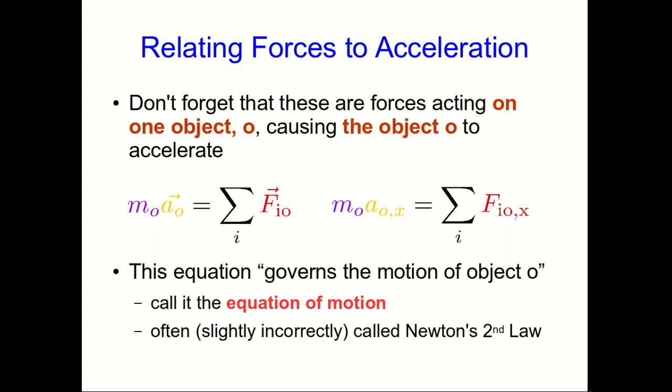Technically that's not quite correct. The equation we started out with—that the time derivative of the momentum is the vector sum of the forces—is really the thing that's called Newton's second law. This that we have here is a special case for a constant inertia. So I'm going to call it the equation of motion, partly because that's technically more correct, but also because it's just a better description of what this equation does.